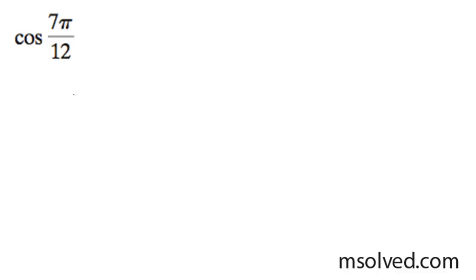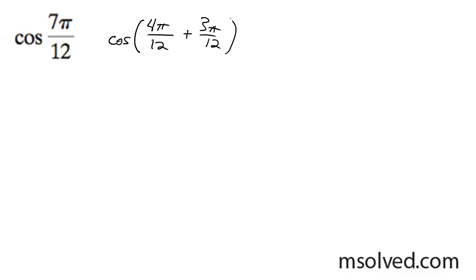Let's find the trig identity for cosine of 7π over 12. I'm going to break this down into components we recognize. We can break this down into 4π over 12 plus 3π over 12, which is the same thing as cosine of π over 3 plus π over 4.